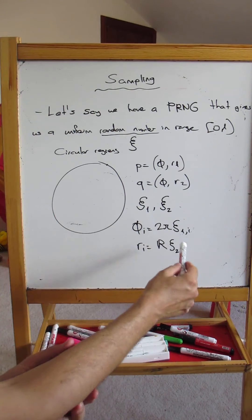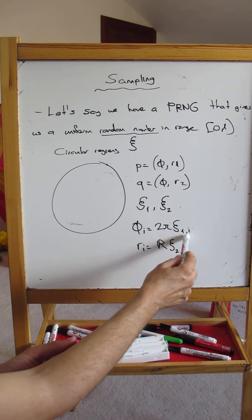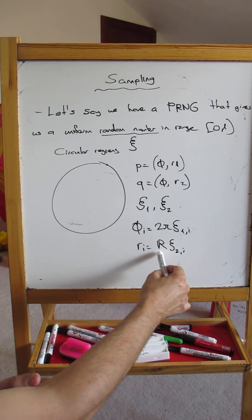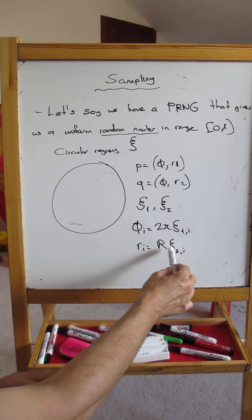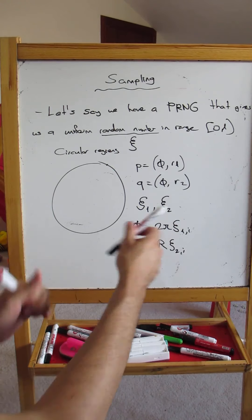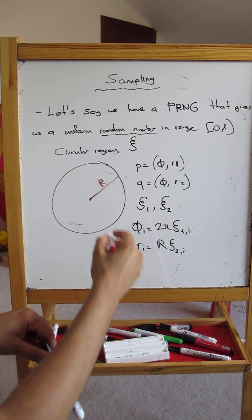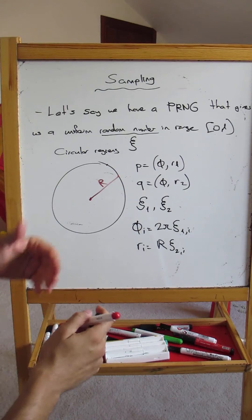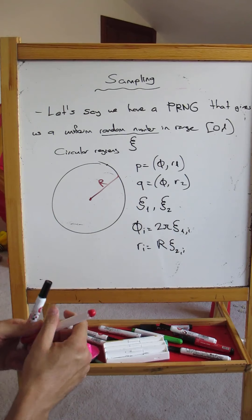Now here what we are doing is we are covering all possibilities, because chi is between 0 and 1. 2π chi is going to be somewhere between 0 and 2π, and because chi_2 is also between 0 and 1, r times chi_2 - this r is the radius - is going to cover the radius range.